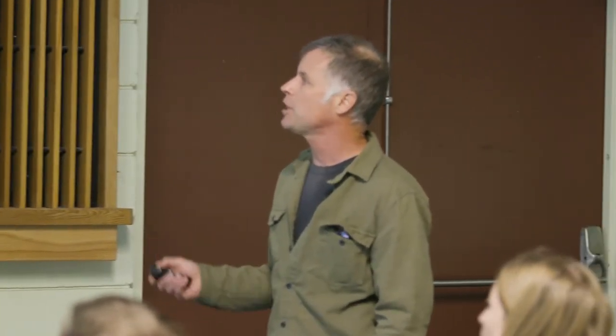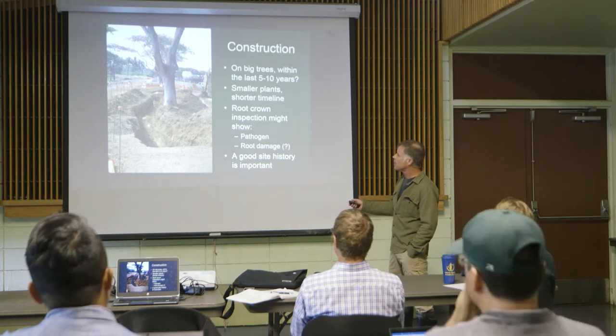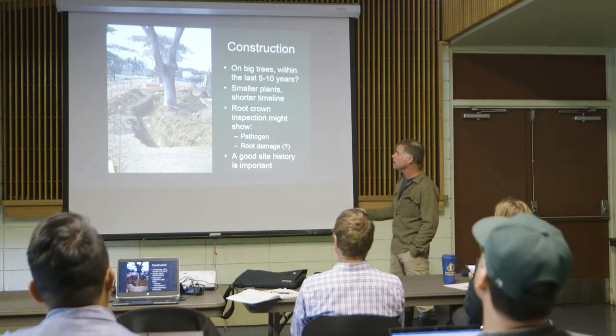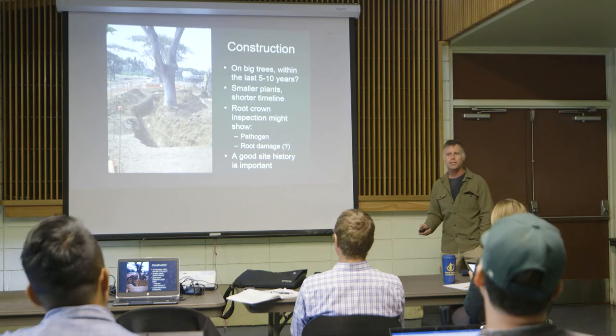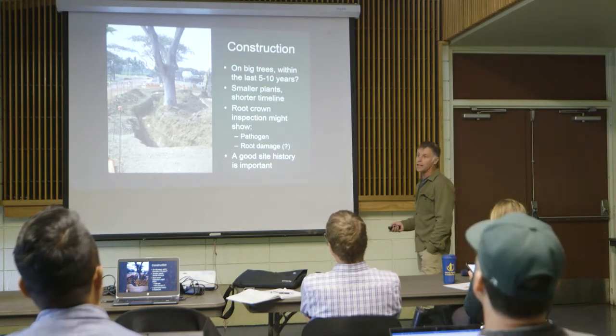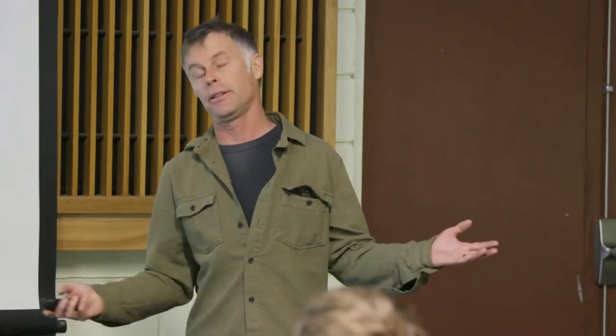When we do a root crown inspection here, it might show a pathogen or root damage, but it depends. If they did the trenching three or five feet out and you do a root crown inspection right around the base of the tree, you won't necessarily see the root damage. So this is a case where a good site history is important. If you're a master gardener or in the trades, half the time you're showing up for the first time after the plant is halfway down the slide, needing to understand what's been happening in the last five to ten years.